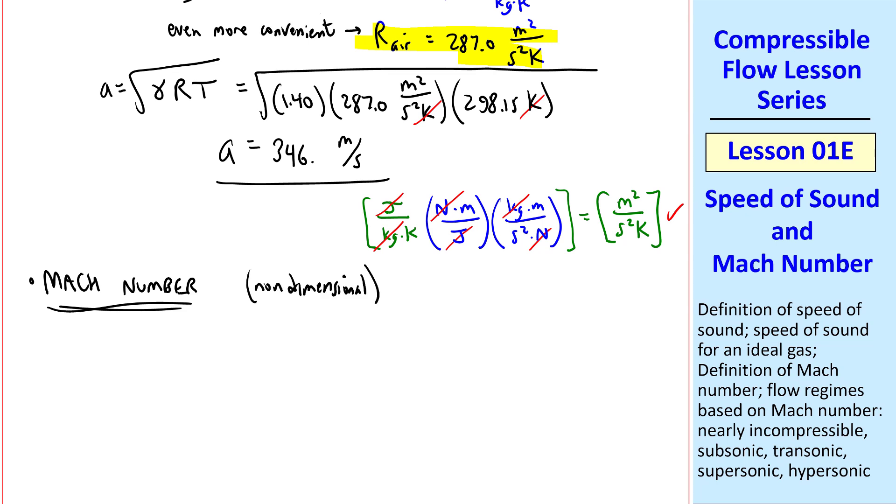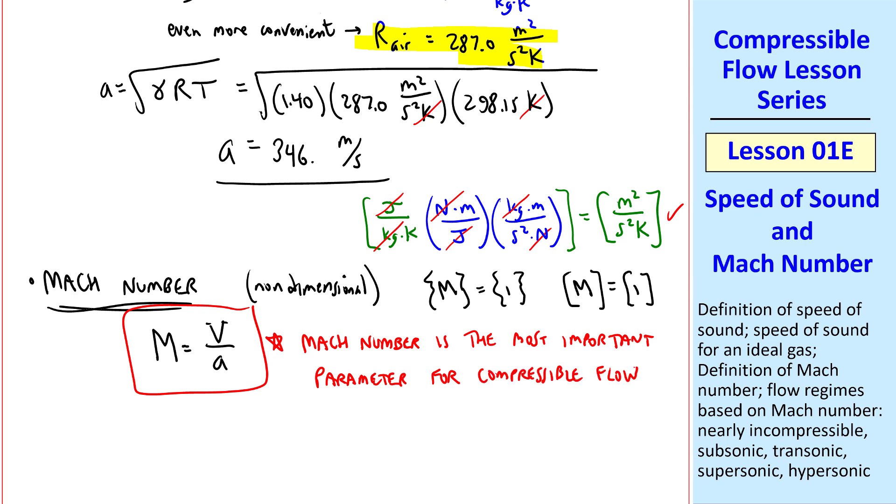Now let's define Mach number. It's a non-dimensional parameter. Again, using the symbol capital M. The dimensions are 1, and the units are 1 or no units. We define Mach number as speed over speed of sound. It's the ratio of the actual speed of the gas to the speed of sound. It turns out that Mach number is the most important parameter for our study of compressible flow. When we studied incompressible flow, Reynolds number was the most important parameter. But here Mach number will appear in almost all our equations. As a side comment here, don't confuse capital M Mach number with the same letter, capital M, that we use for molecular weight.